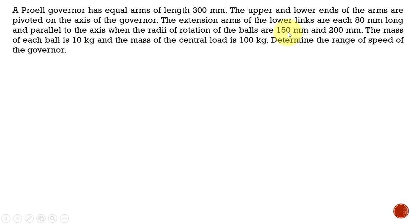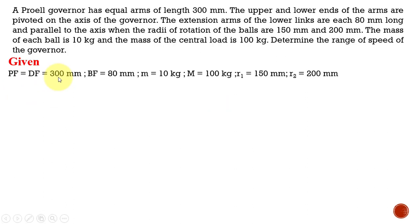We are provided with two different radii. One is 150 mm and another one is 200 mm. One corresponds to the minimum speed of the governor and another one corresponds to the maximum speed. The upper and lower arm lengths are both equal at 300 mm, and the extension arms of the lower links are 80 mm.